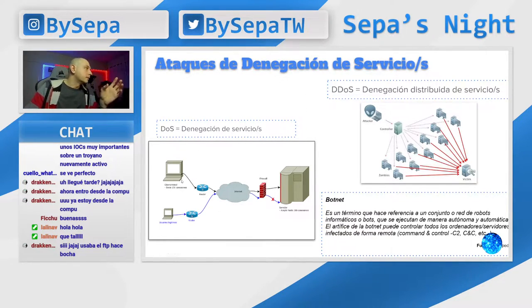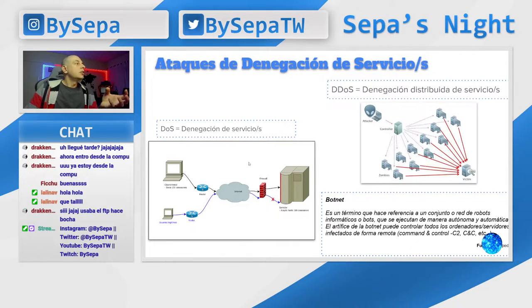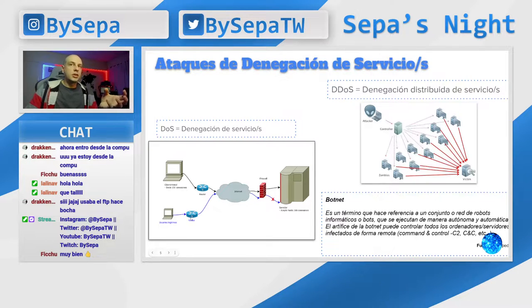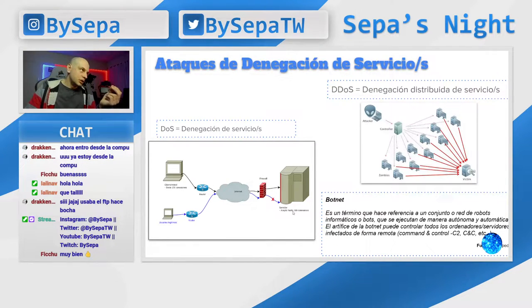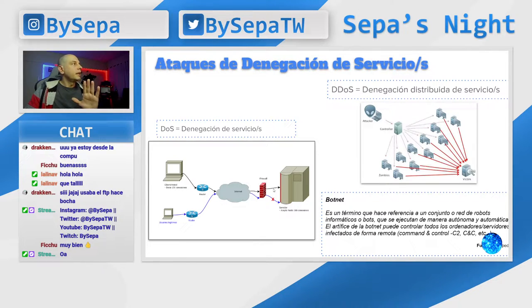¿La denegación de servicio común y corriente qué es? Es un cibercriminal que genera conexiones suficientes contra un servidor hasta pasar el límite. Por ejemplo, si el servidor acepta hasta 100 conexiones, el cibercriminal manda 150 conexiones. Entonces el usuario legítimo que se quiere conectar, como ya hay 150 conexiones llegando al servidor, el servidor no puede responder la 151 porque ya está excedido en 51 conexiones. Así se produce una denegación de servicio común y corriente.